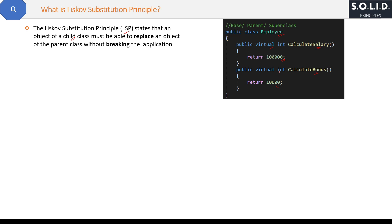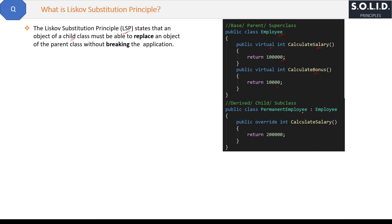Now we have one class PermanentEmployee which is derived from the Employee class. This class overrides the calculateSalary method of the base class and sets a new salary. This class will automatically get the calculateBonus method from the base class because we are not overriding it here, and as per the rule of inheritance, base class methods are automatically available for derived classes.